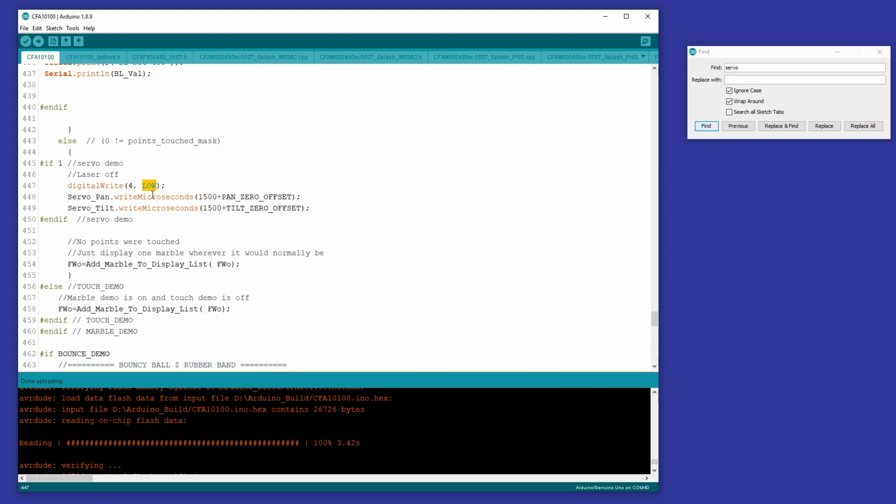And then just for kicks, we return the servo to 1500 and 1500 plus our offsets, which puts it back in the center. So that's how simple it was to modify this standard demo code to become this laser demo.